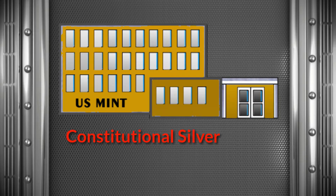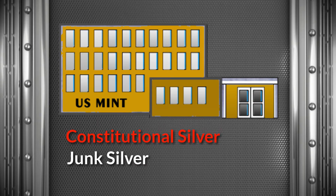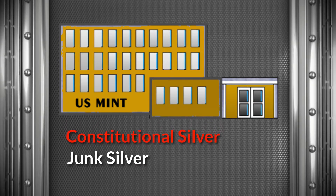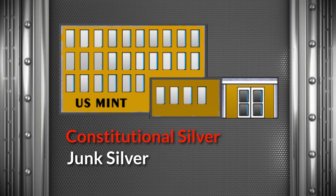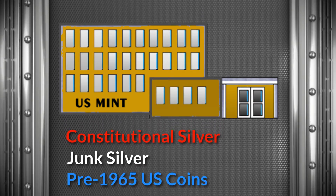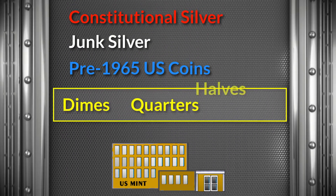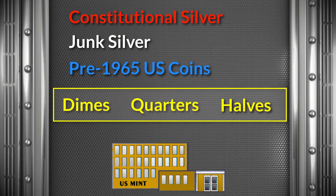Constitutional silver, or junk silver, is any U.S. coins pre-1965. We're talking here about primarily dimes, quarters, and 50 cent pieces.